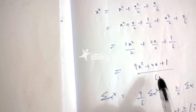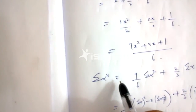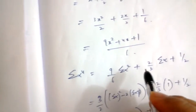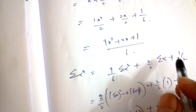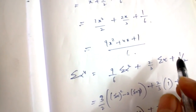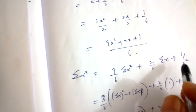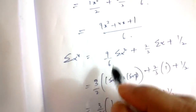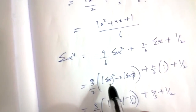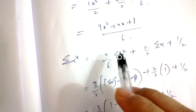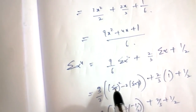Now we need to find the summation of alpha⁴, which gives (9/6)·Σα² + (2/3)·Σα + (1/6)·3. That last term equals 1/2. Simplifying 9/6 to 3/2, we have (3/2)·Σα².